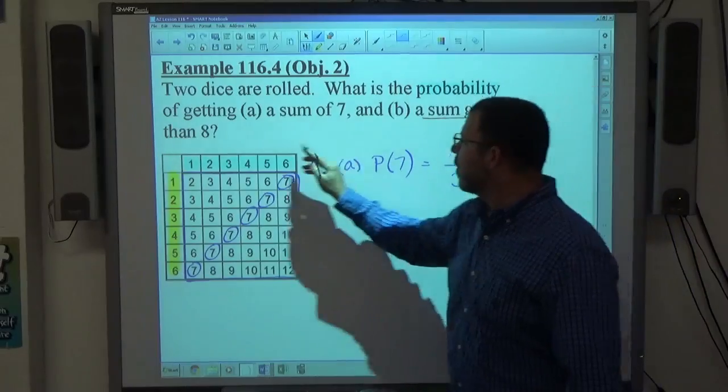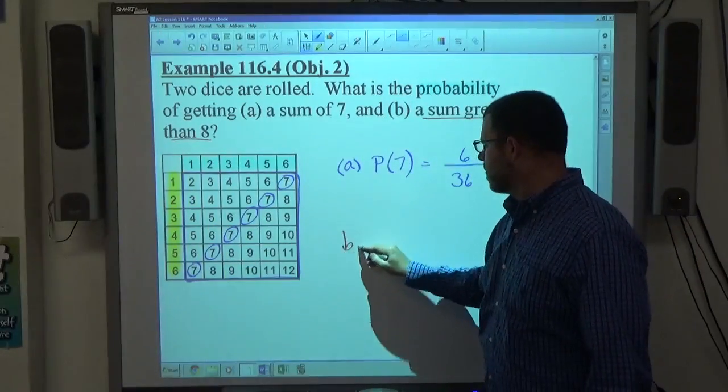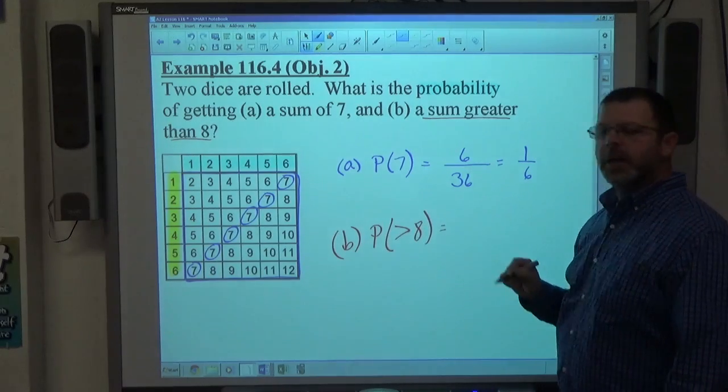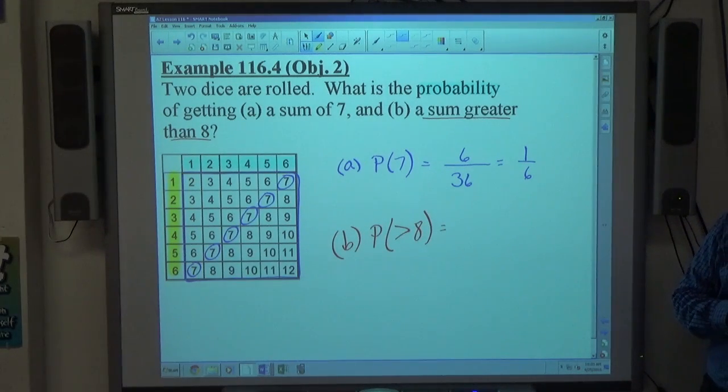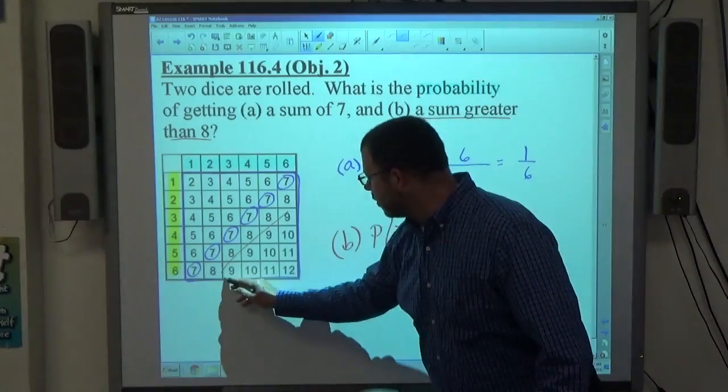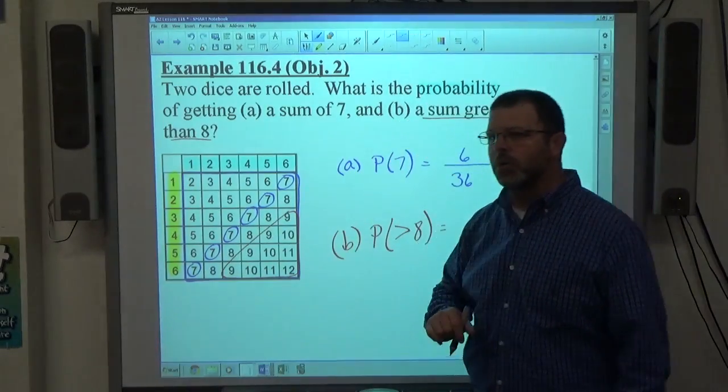For part B, it says a sum greater than 8. So the probability of greater than 8. What's greater than 8 look like? 9, 10, 11, 12. Those four are all greater than 8, right? So this little triangle over here represents what we're looking for.